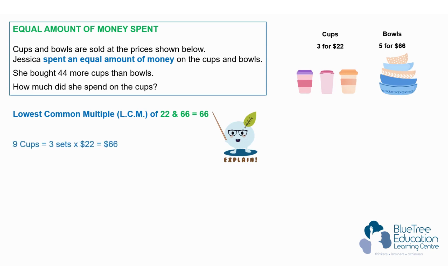When we look at how we will achieve the spending of $66 for the cups, it would mean that I need to buy three sets of those three cups in that group, which means nine cups that will cost $66, which is the same as five bowls for $66.